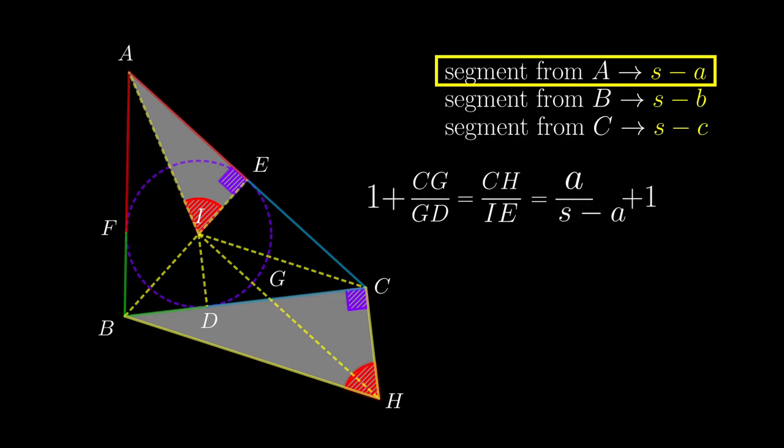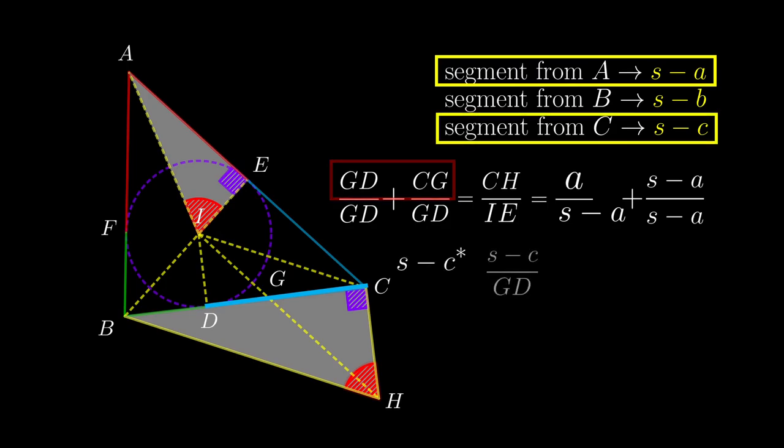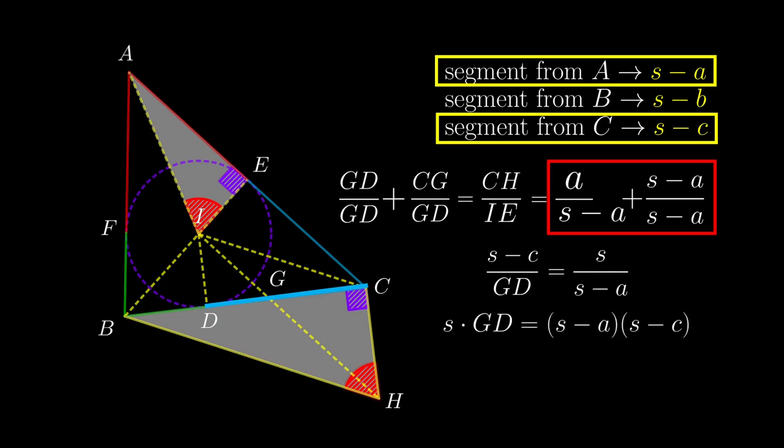Now we add 1 to both sides, and we write 1 in different forms. Now the sum of GD and CG is from the diagram CD, and from the results previously obtained, it is actually s-b. Now focus on the right side, which is s over s-a. Rearranging, we have this formula. We are quite close now.